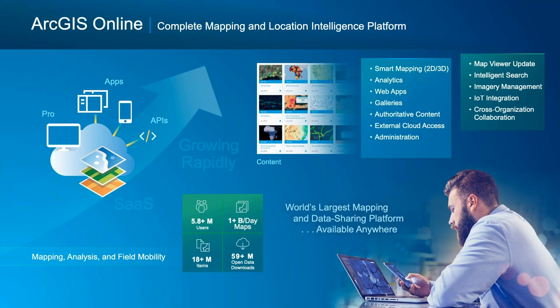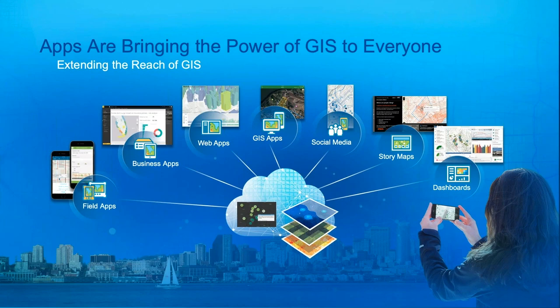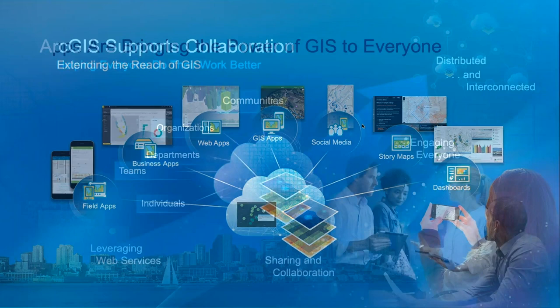ArcGIS Online allows your organization to have a central data portal where your spatial content resides. Your GIS users access the data in the portal through focused apps and tools that allow them to consume, edit, analyze, and create geographic data and content — shared internally or made available as web maps and apps to the public. Not everyone needs to be a trained GIS analyst to use location data and maps in the field, in the boardroom, or in the community.